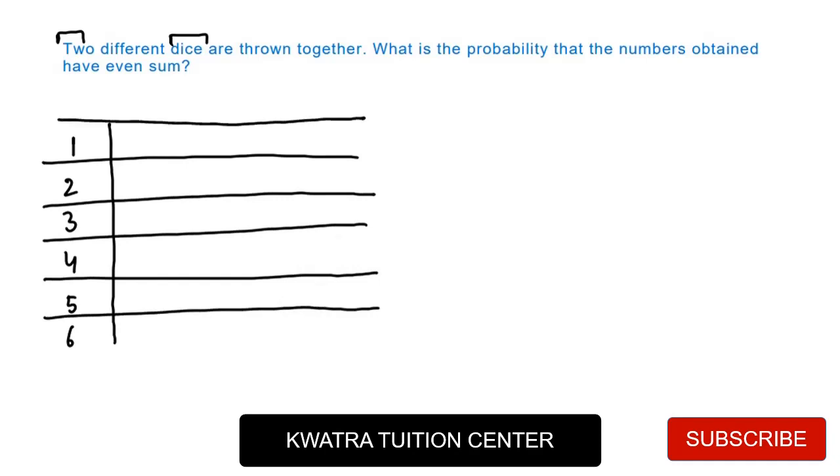So first of all, you have to mention the same thing on the top: 1, 2, 3, 4, 5, and in the last, mention the 6. Now, first of all, let's create 36 outcomes.